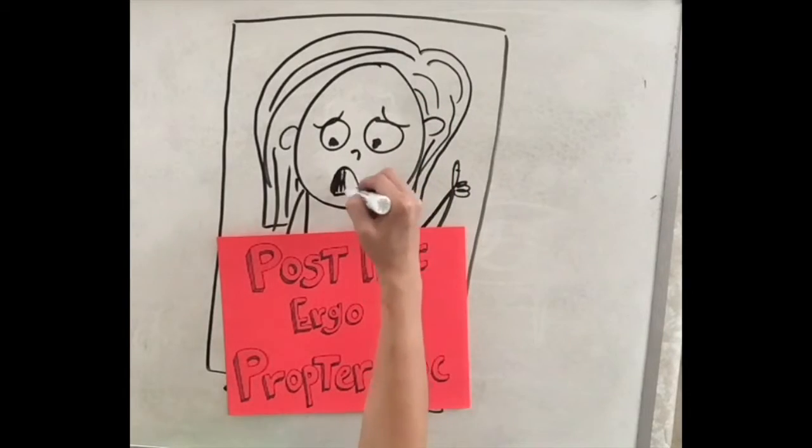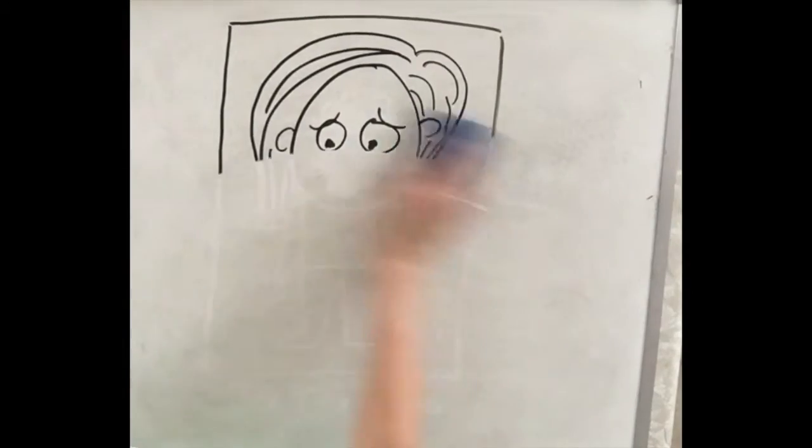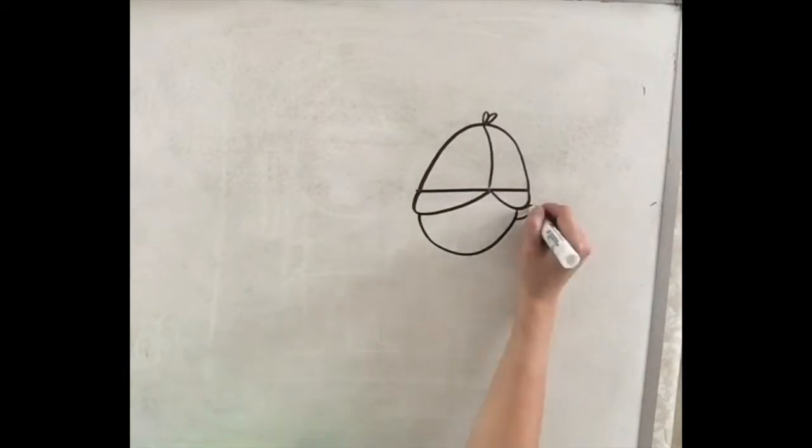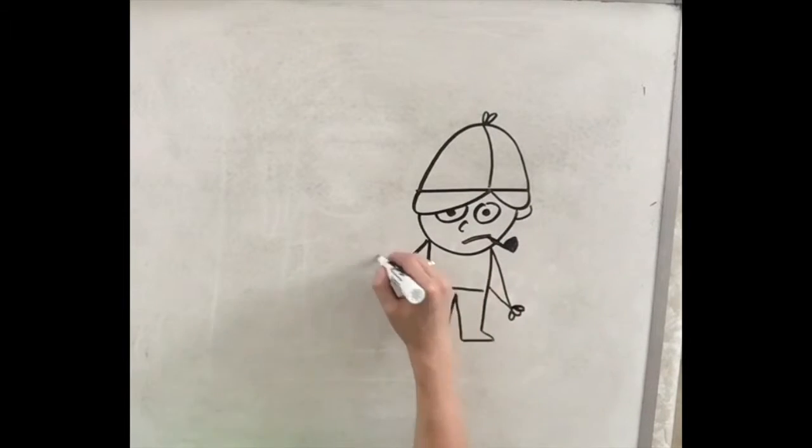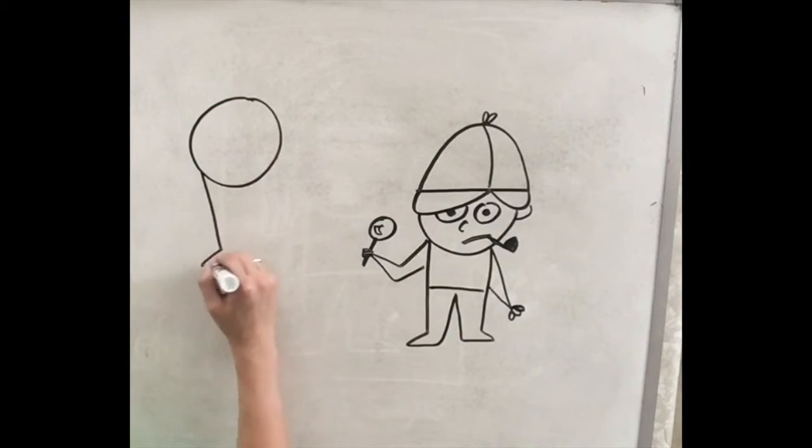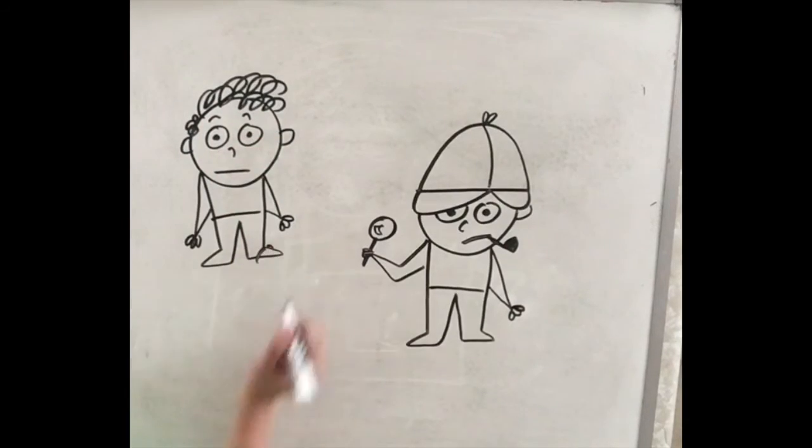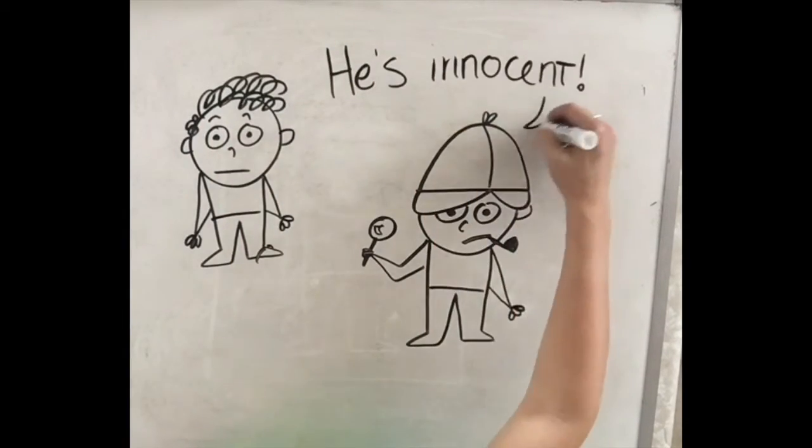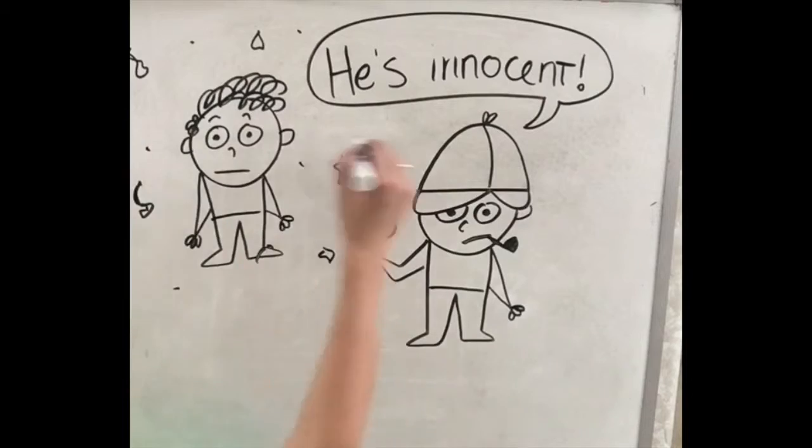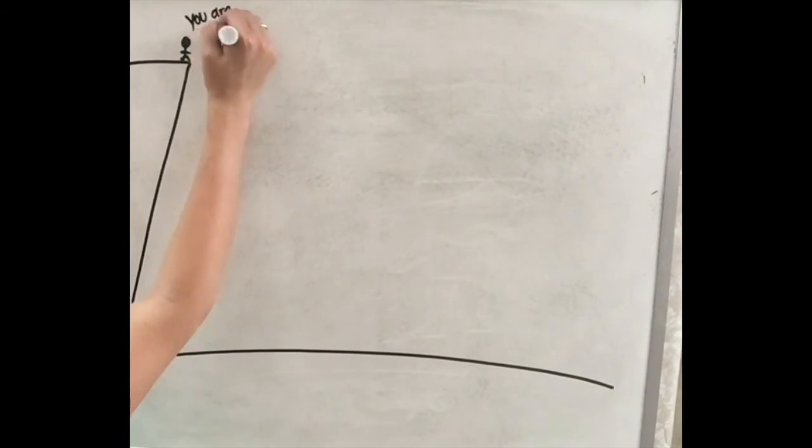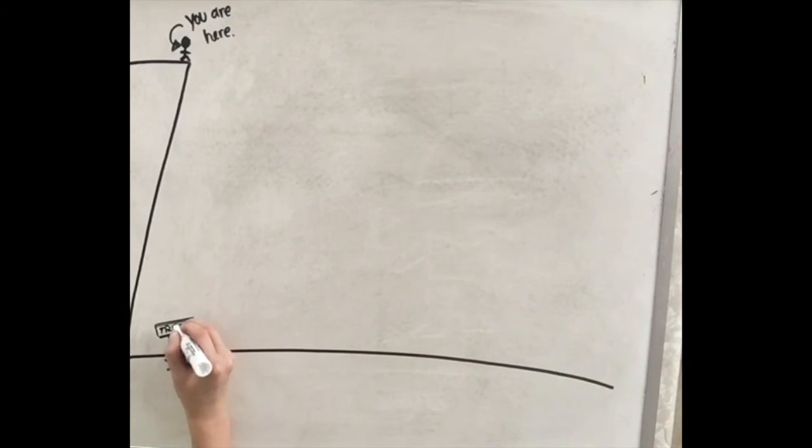How do we avoid becoming a victim of post hoc ergo propter hoc? Put on your Sherlock hat and do some careful investigation. Could John's untied shoes really cause the tornado? Or maybe it was the weather. Remember, correlation does not mean causation. If it correlates, you must have evidence to prove its causation. So if you ever find yourself about to make a claim by leaping, consider how far away you'll land from the truth.